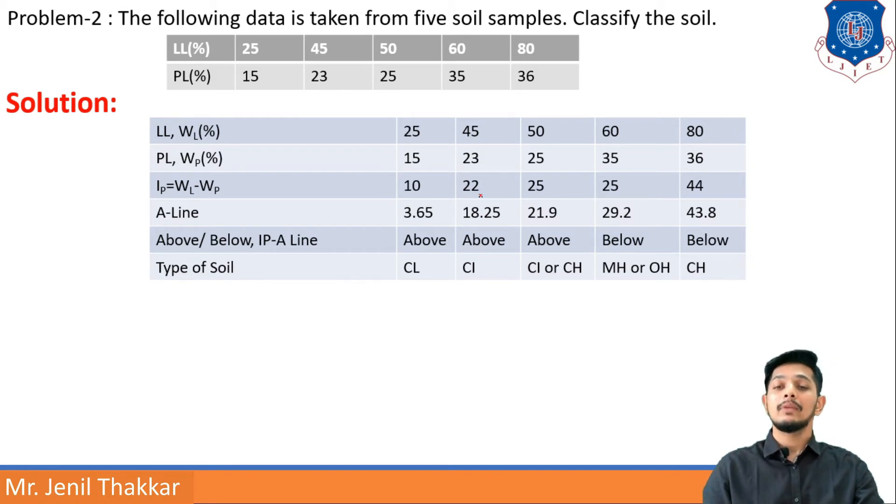A-line equation value is coming out as 3.65, 18.25, 21.9, 29.2, and 43.8. What is IP A-line equation? 0.73(WL - 20). According to that the values are like this. Now I have to decide in all five cases if it is coming above or below IP A-line.